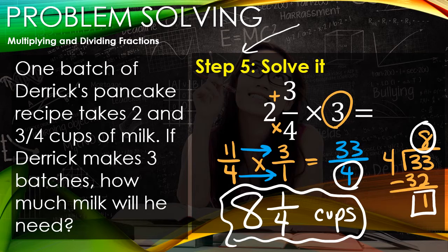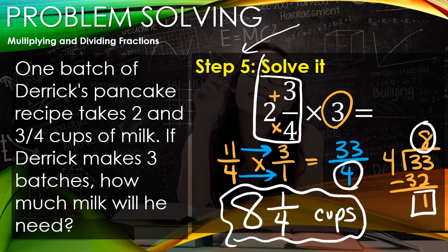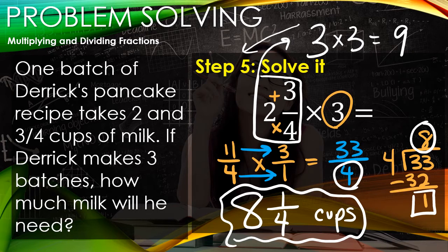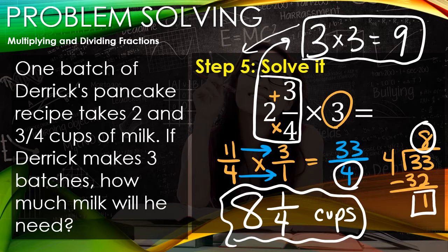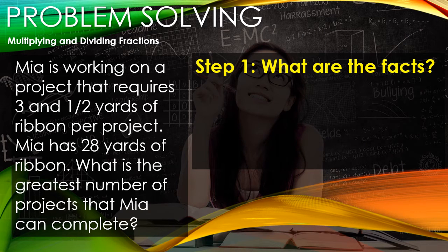To double-check, if we estimate 2 and 3/4 to be 3, and multiply 3 times 3, it gives us 9. Based on our estimate, our number 8 and 1/4 is a very reasonable answer and is the correct answer for this problem.